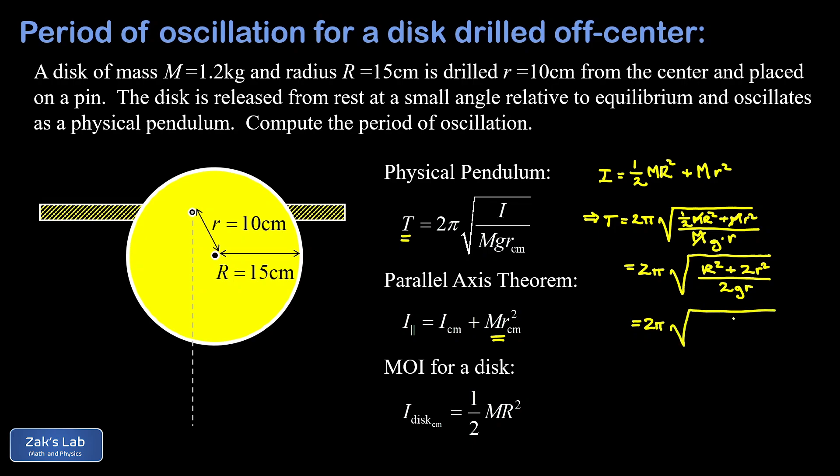We'll go ahead and plug numbers into this right now, but there's a comment I want to make on a limiting case that we can study in the symbolic solution. But for now, let's just get the number on this. Big R is 15 centimeters—note that I switched that to 0.15 meters—and little r is 10 centimeters, we call it 0.1 meters here. We'll use 9.8 for g. When I run the numbers on this to three significant digits, I get 0.925 seconds for the period of oscillation.